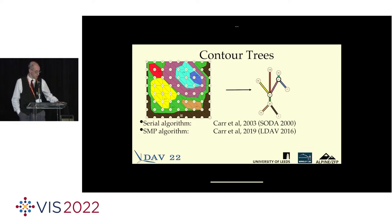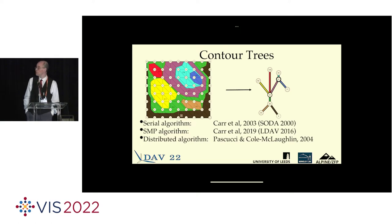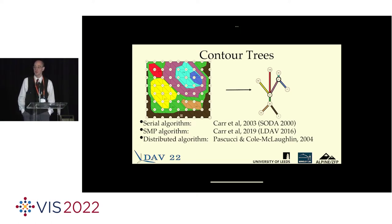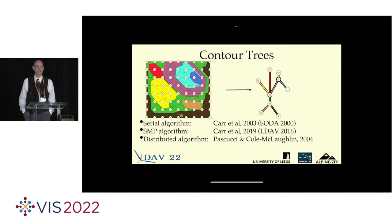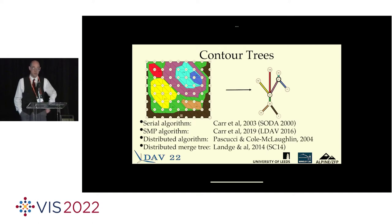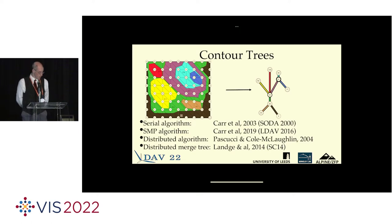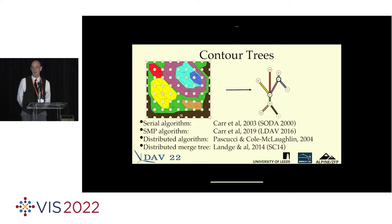In the distributed layer, there is an algorithm published back in 2004 by Valerio Pascucci and Cree Cole-McLoughlin. It has a minor problem which we'll get to on the next slide, and which is the real motivation for this talk. There is also a distributed algorithm for computing the merge tree, which is a related computation, back in 2014 at Supercomputing, and we will exploit that too. But it's not actually computing the contour tree, and it is non-trivial to extend it to this.